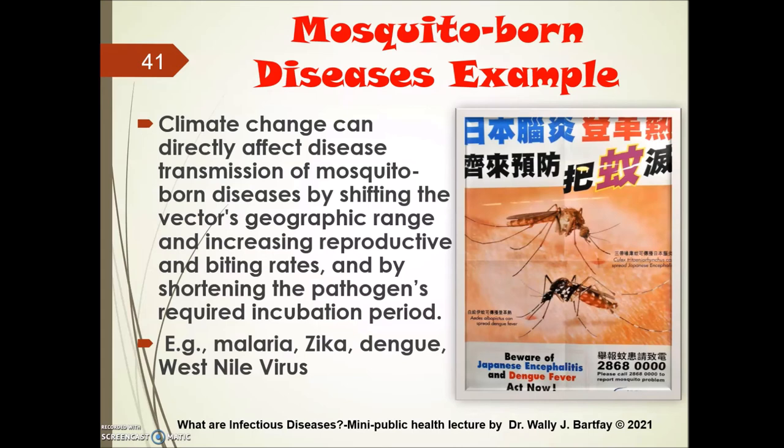Climate change can directly affect the transmission of mosquito-borne diseases by shifting the vector's geographic range, increasing reproductive and biting rates, and by shortening the pathogen's required incubation period. This applies to diseases like malaria, Zika, dengue, and West Nile virus.